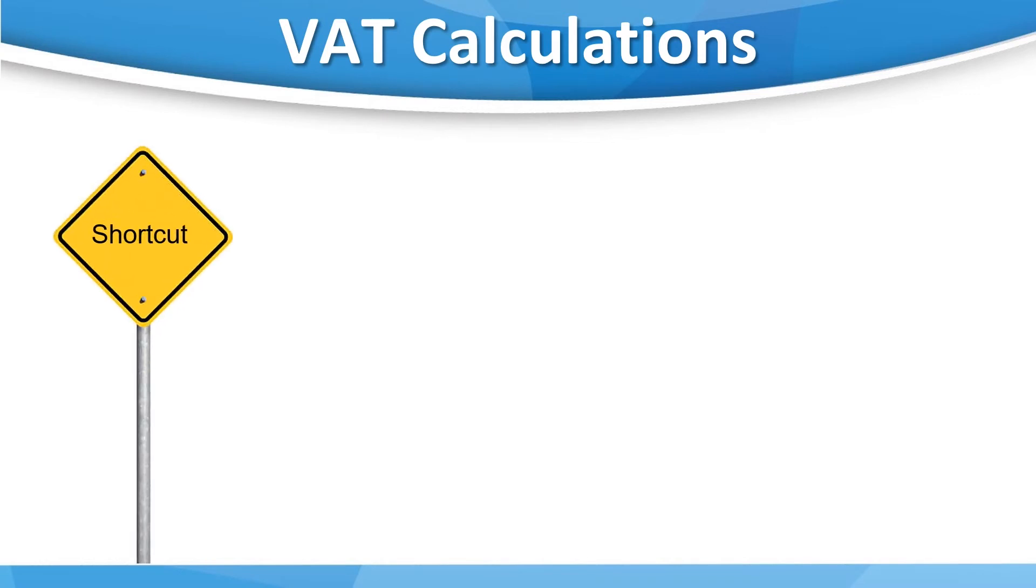If you're mathematically minded, you may have noticed a shortcut for calculating the VAT amount from the gross amount. If we look at the VAT percentage of 20% and the total percentage of the sale, 120%, you can cancel this down to 1 sixth. Therefore, if we take the gross amount and divide by 6, we'll find the amount of VAT. However, remember this method will only work whilst VAT remains at 20%.